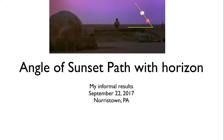Angle of sunset path with horizon. My informal results on the equinox, September 22, 2017 in Norristown, PA. The idea here is that you take two photos fairly near either sunrise or sunset, and then you measure the angle that it makes with the horizon.